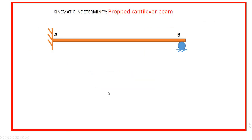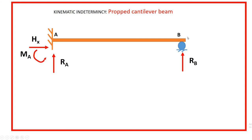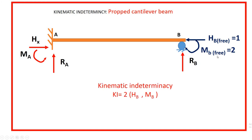For the propped cantilever beam, the fixed support has no degree of freedom because it can resist all three reactions. The roller support has only one reaction, so the free reactions are two: horizontal reaction and moment at support B. Therefore the kinematic indeterminacy of the propped cantilever beam is two.